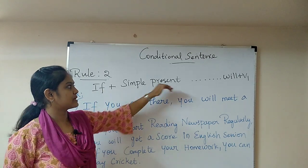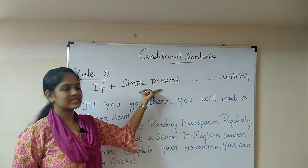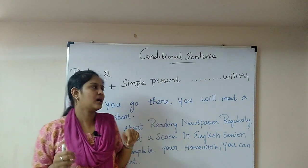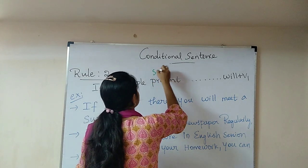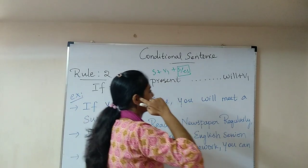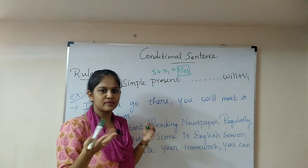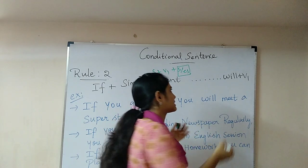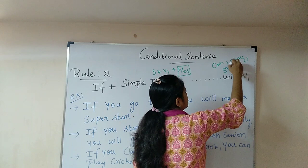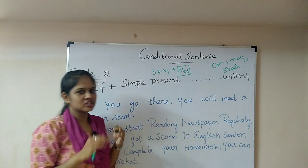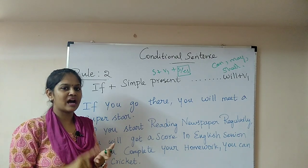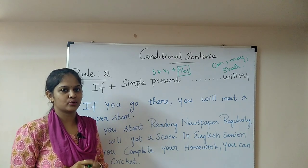Now rule number two. In the if clause, we use simple present tense, and in the main clause, we use 'will + V1' format. Apart from 'will,' we can also use 'can,' 'may,' or 'shall' in the main clause. Note that conditional sentences can also be formed with conjunctions like 'even if,' 'until,' 'unless,' 'provided,' and others — but here we focus on 'if.'